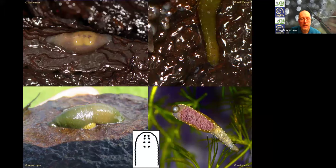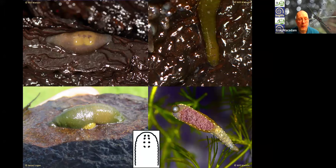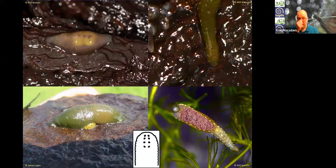The duck leech, Theromyzon tessulatum, has two different forms: when brooding eggs it becomes a gelatinous, green or amber-shaded mass — you can see the eggs at the side. When not brooding, it's a brighter green and more muscular. It has a distinctive eye pattern of eight eyes that slightly diverge from each other, which is very recognisable in real life.